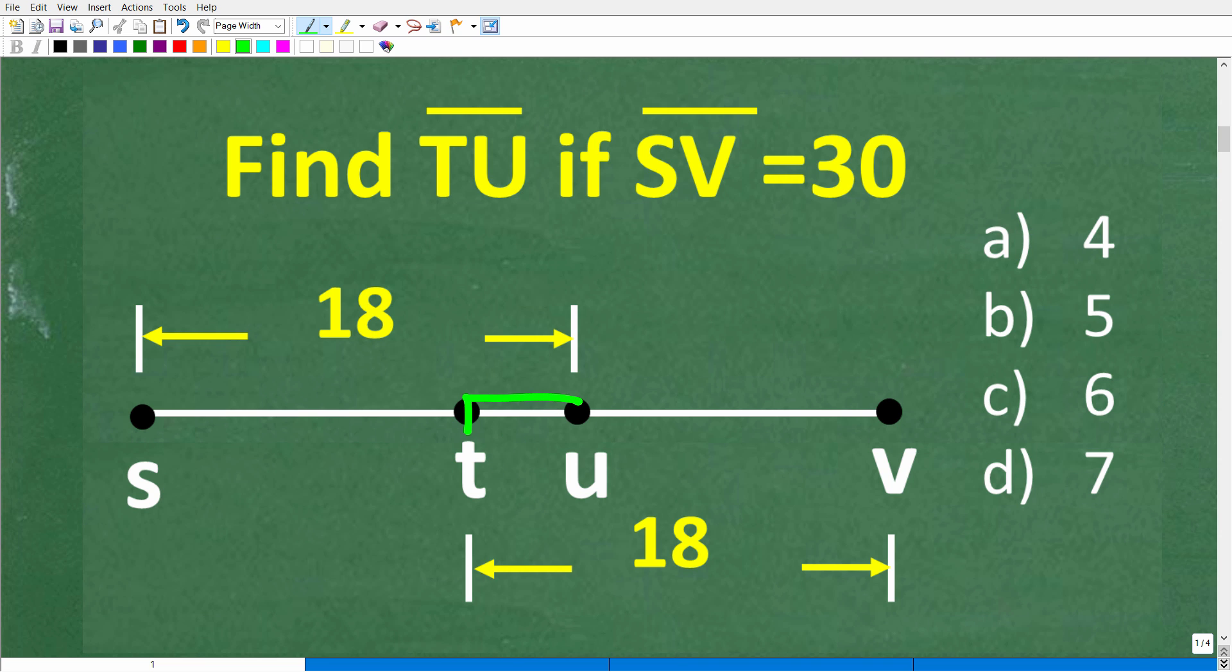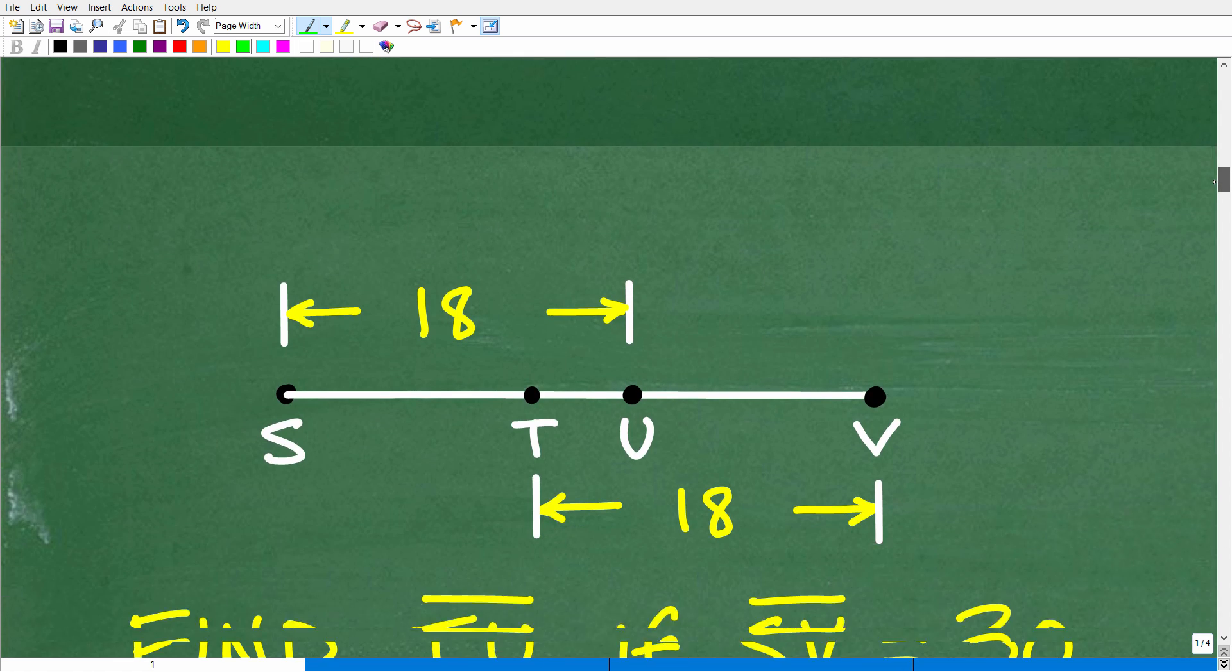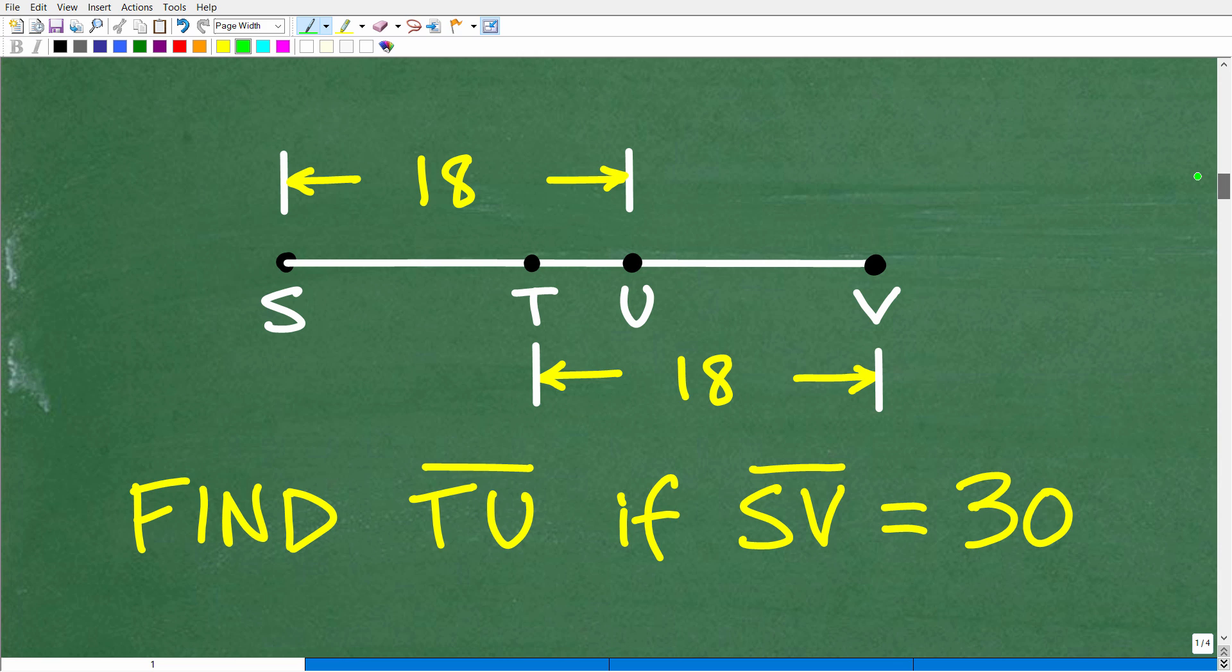Well, remember, the problem is we need to find the distance between TU and we need a strategy. And that strategy, again, is to think of these points as locations on a number line. So let's go ahead and see what that looks like right now. So here is our problem.